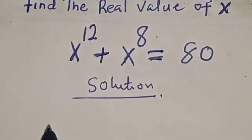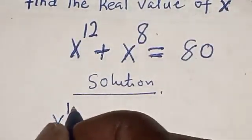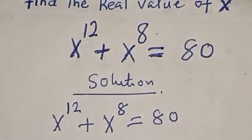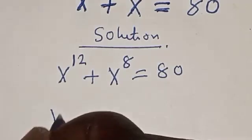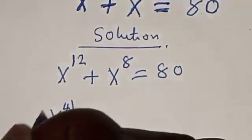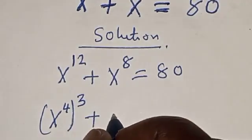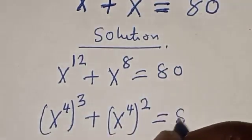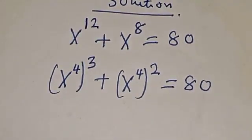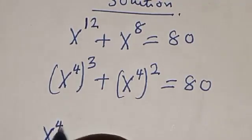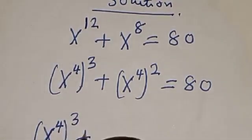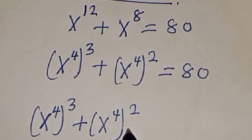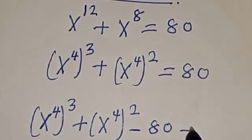We have the given equation: x raised to power 12 plus x raised to power 8 is equal to 80. This is the same thing as x raised to power 4, raised to power 3, plus x raised to power 4, squared, is equal to 80. So we have: (x^4)^3 + (x^4)^2 minus 80 is equal to zero.